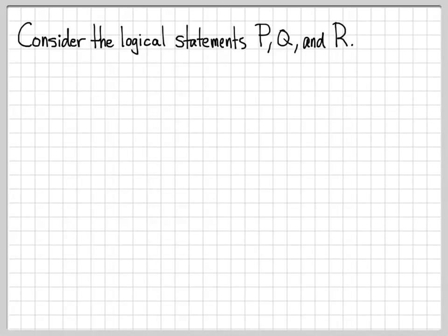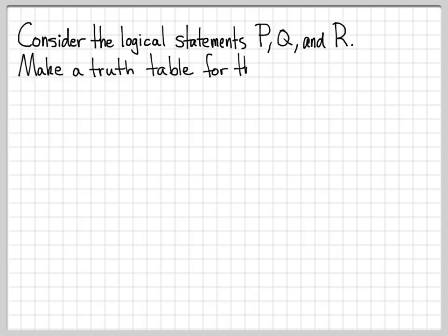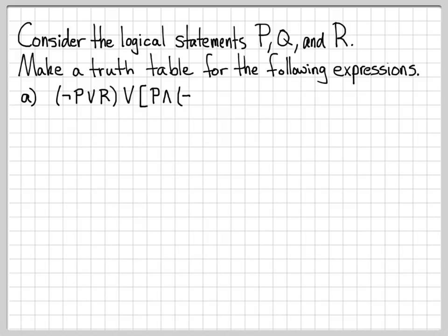This is another example of constructing a truth table, but it's a little bit more complicated because we're going to be working with logical statements P, Q, and R. So we now have three different variables. And we're going to make a truth table for the following expression: not P or R, or P and quantity not R or Q.